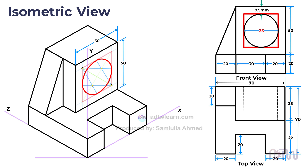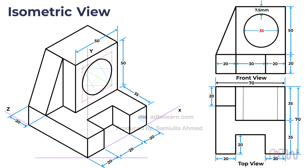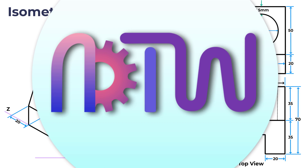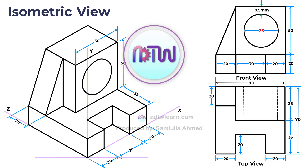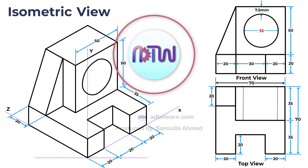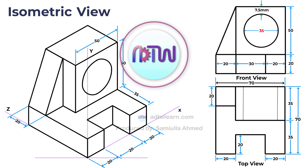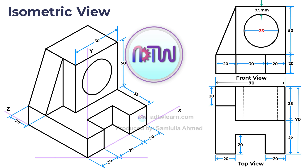This is how the final circle looks in the isometric view, and this is the completed final figure. After this, do the dimensioning of the figure. This is the final isometric view of the object. I hope this tutorial helped you understand how to construct the isometric view of an object from its orthographic projections. If you found this video useful, please give it a thumbs up, and if you're new to my channel ADTW Learn, make sure to hit the subscribe button to stay updated with all my latest videos.